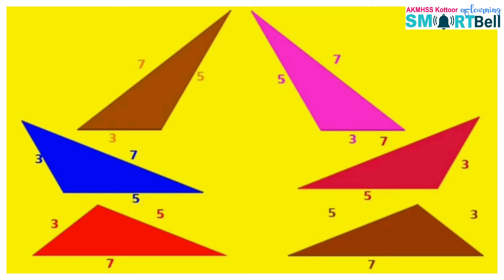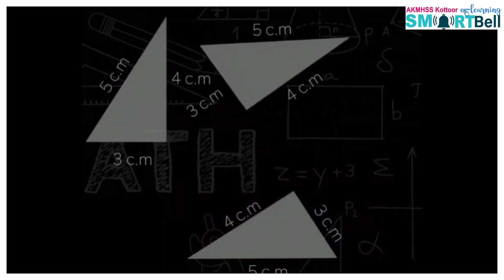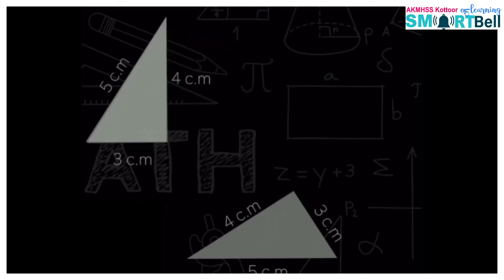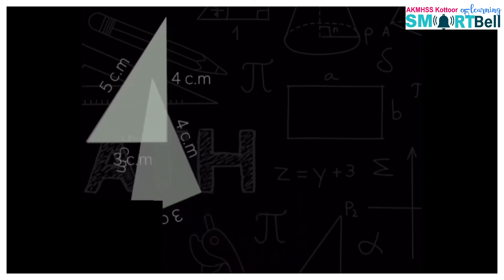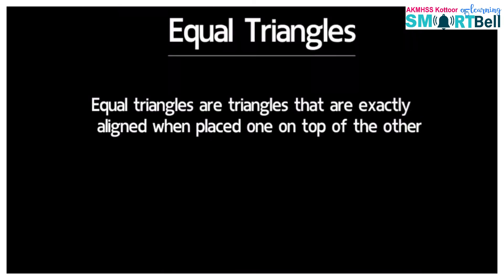Observing these 6 triangles, we can see that all of them are obtained by turning and flipping the first one. We know that in all these 6 triangles, the sides are equal. What about their angles? Let's check it. When the equal sides coincide, the angles also coincide.